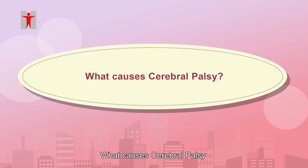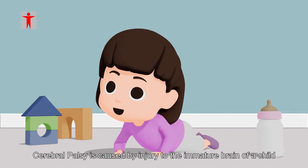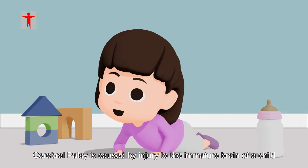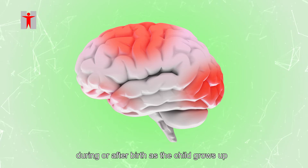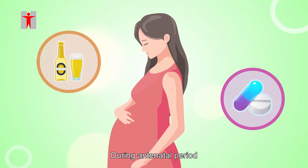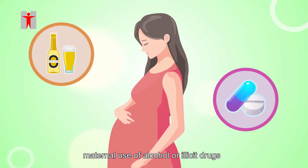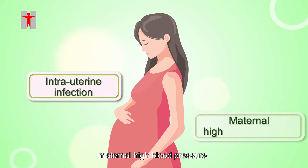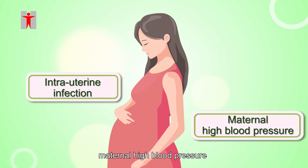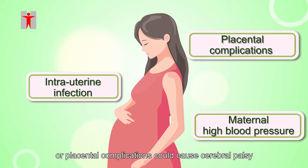What causes Cerebral Palsy? Cerebral Palsy is caused by injury to the immature brain of a child before, during, or after birth as the child grows up. During the antenatal period, maternal use of alcohol or illicit drugs, intrauterine infection, maternal high blood pressure, or placental complications could cause Cerebral Palsy.